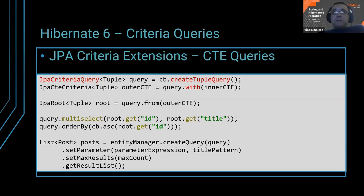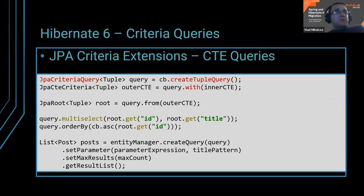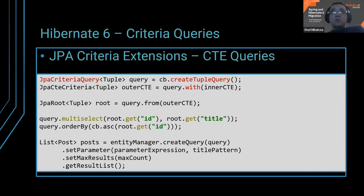A better alternative to UUID: I'm using a time-sorted ID in the Hypersistence Utils project, which is more compact. The rate of collision is very low, and even then it wouldn't be a real problem because you have a retry annotation which, on constraint violation exceptions, can retry and regenerate a new one — which is extremely rare.